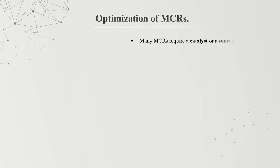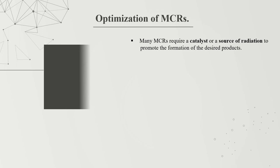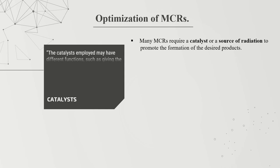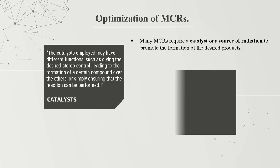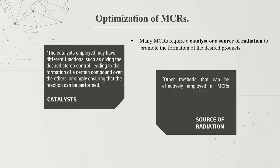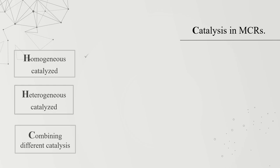Many multi-component reactions require a catalyst or source of radiation to promote formation of the desired product. The catalyst employed may have different functions: giving desired stereocontrol, leading to the formation of certain compounds over others, or simply ensuring the reaction can proceed. Different types of catalysts employed in MCRs will be briefly discussed. Homogeneous catalysis involves the reaction mixture and catalyst both present in the same phase. Examples include Brønsted and Lewis acids, transition metals, organometallic complexes, and organocatalysis.